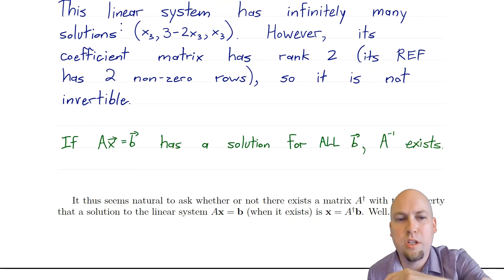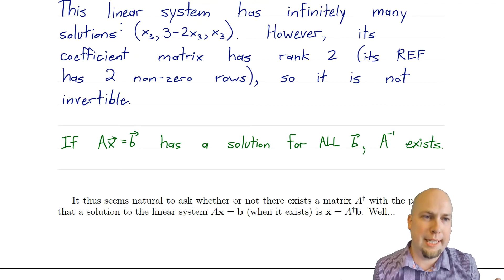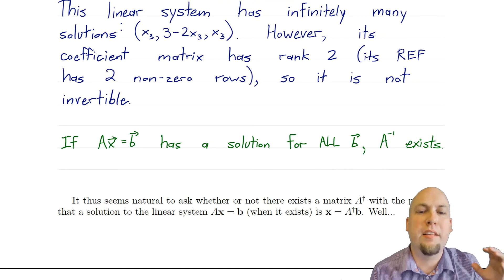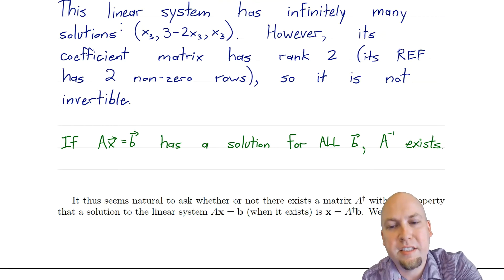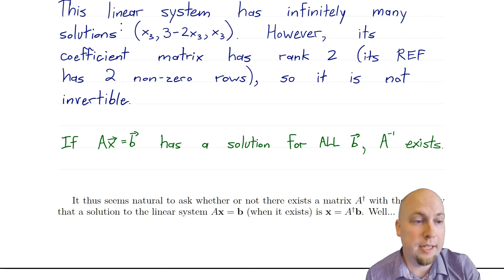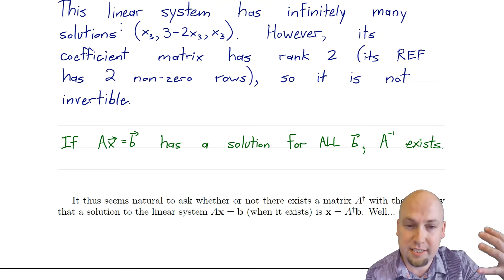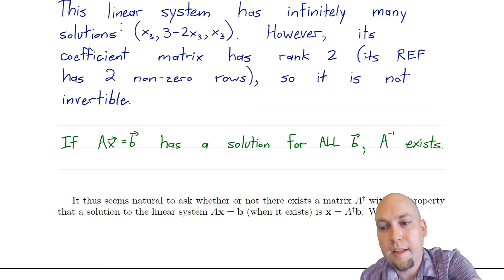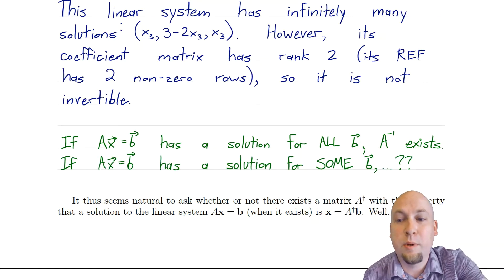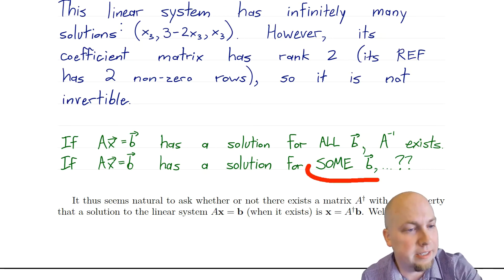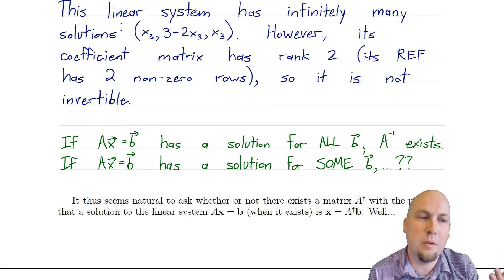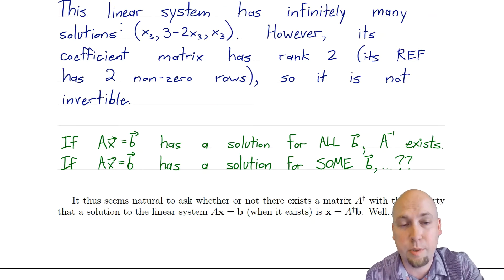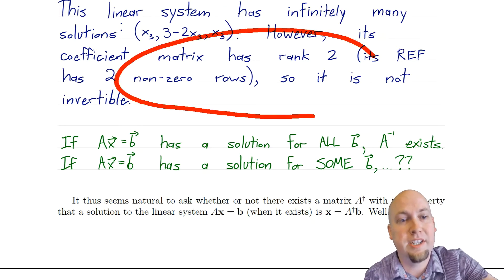Just to remind you of a theorem from the previous class: if the linear system AX equals B has a solution for all B, then A-inverse exists — this is equivalent to invertibility of the matrix, as long as the matrix is square. On the other hand, all that's happened here is we've shown that AX equals B has a solution for a particular B, and that doesn't tell you anything — your matrix may or may not be invertible in that situation.